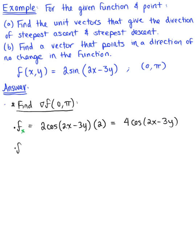Similarly, we find the partial derivative of this function with respect to y. Since we are differentiating with respect to y, we treat x like a constant. This gives us 2 multiplied by cosine of 2x minus 3y, multiplied by the derivative of the argument with respect to y, which is negative 3. So we are left with negative 6 cosine of 2x minus 3y.